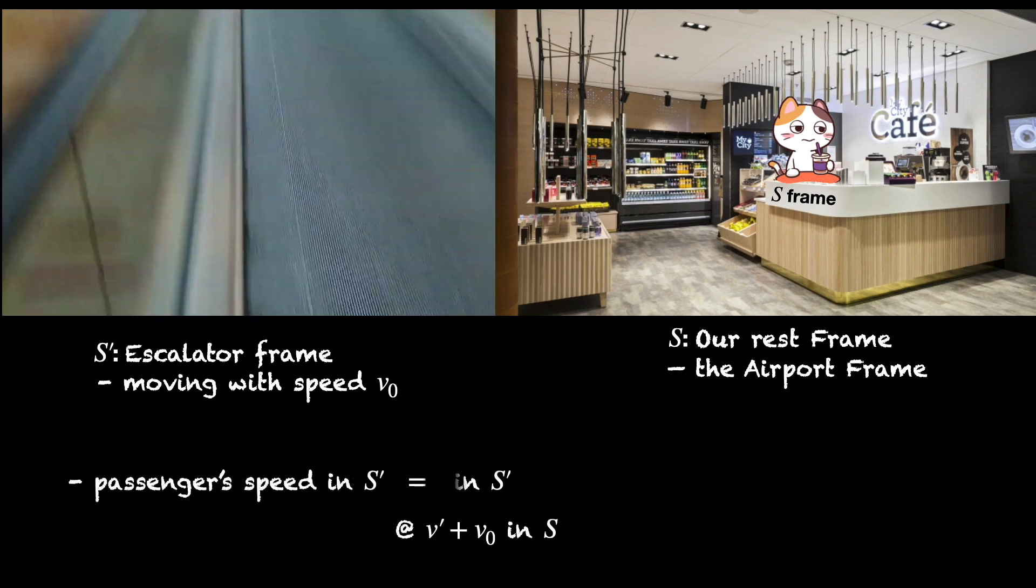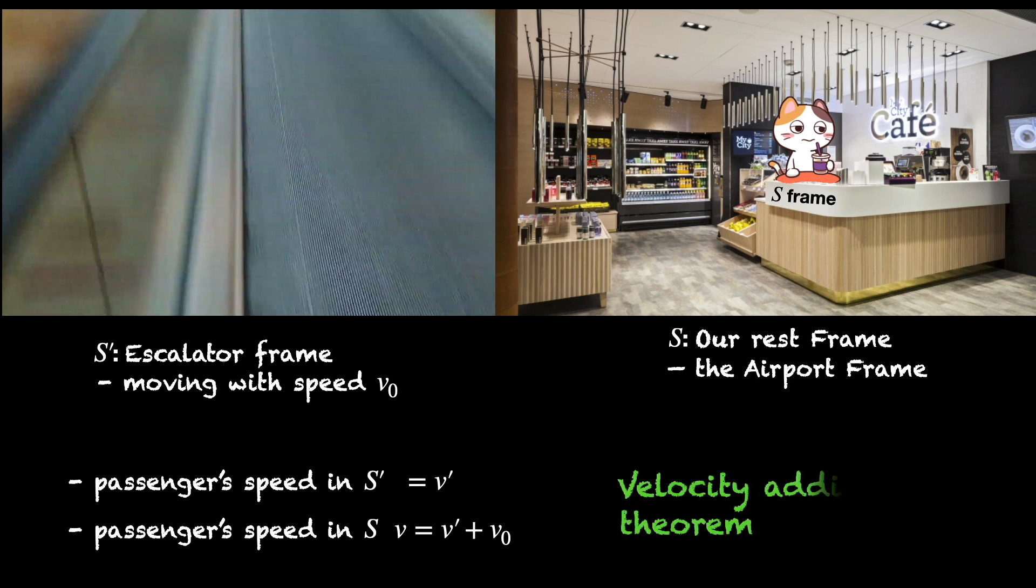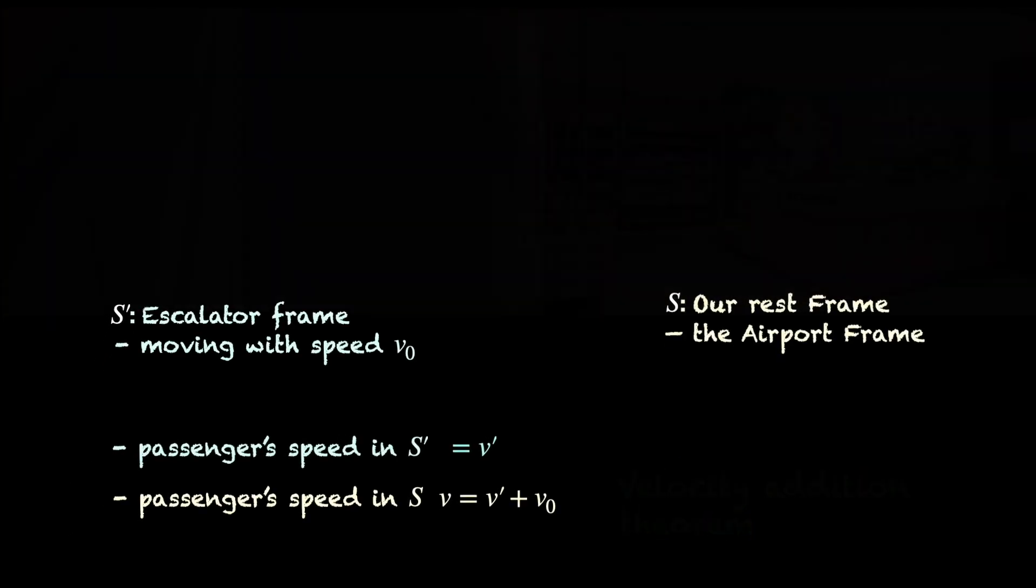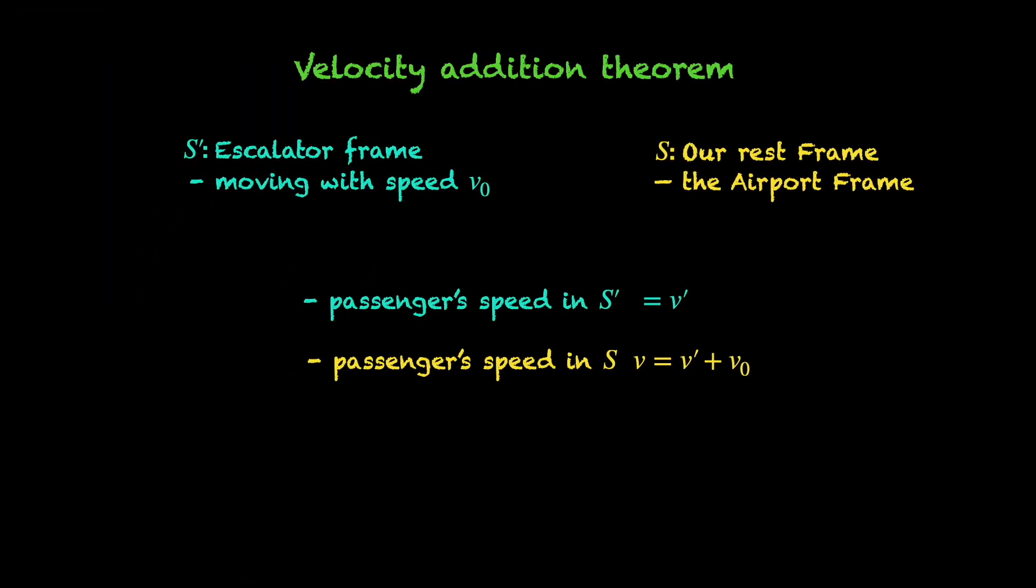From your perspective, his actual walking speed V' is enhanced to V by the escalator's speed V0. This is referred to as the velocity addition theorem. Oh, just to clarify, I am randomly shuffling between speed and velocity because we are considering motion in a single direction only. Ok, so we see velocities may get added up depending on the perspective of the observer.